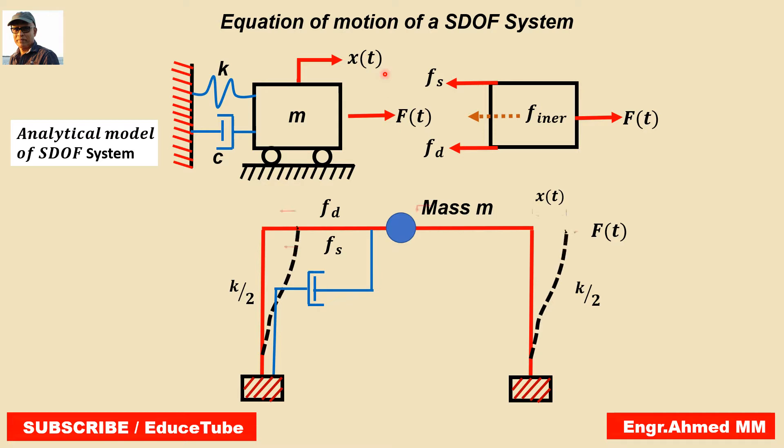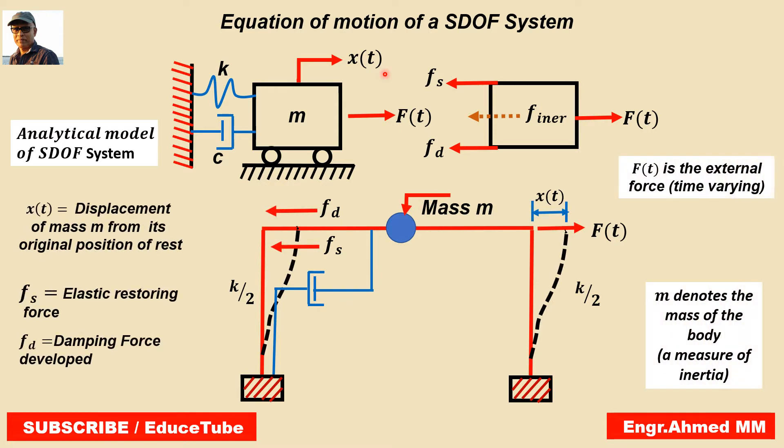A single degree of freedom system is the simplest possible mathematical model in structural dynamics. Here I have taken an analytical model of a single degree of freedom system. Why is it a single degree of freedom system? Because it only requires monitoring a single quantity, the movement of the mass M, to completely describe the vibration of the system.